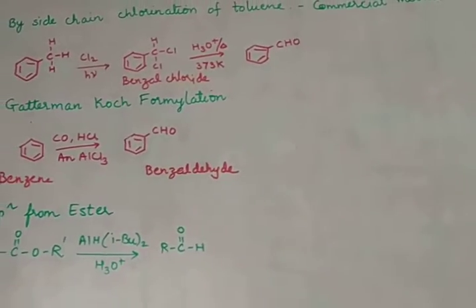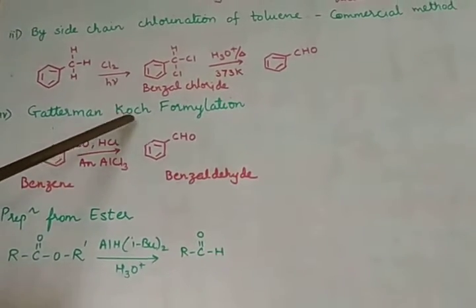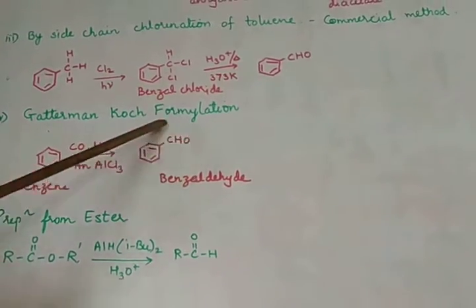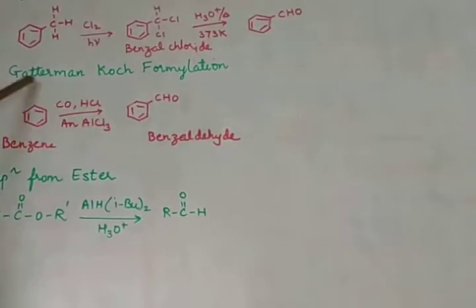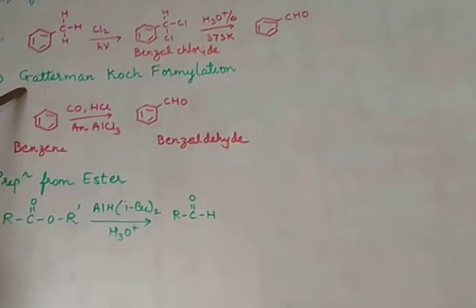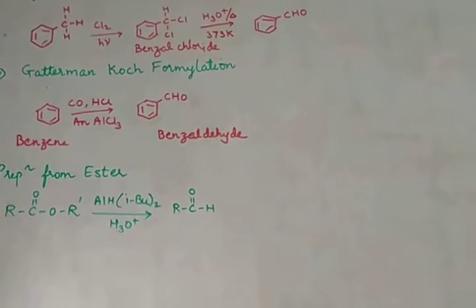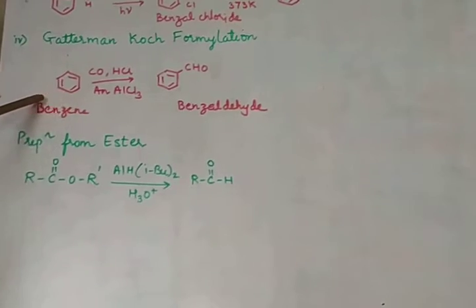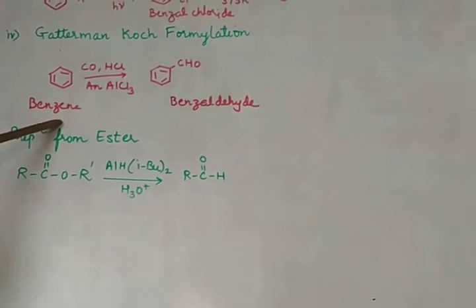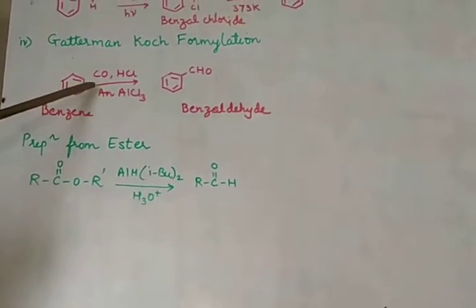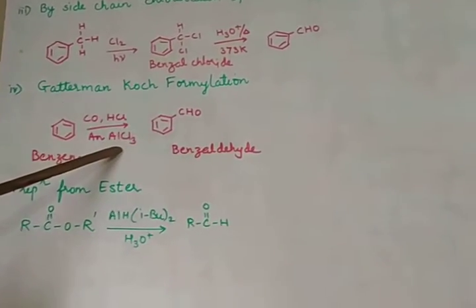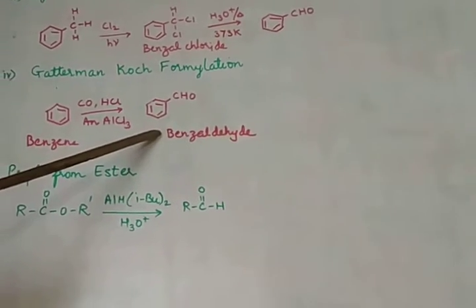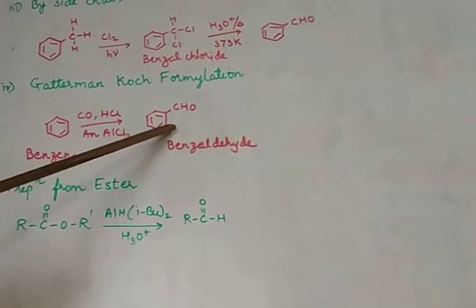The last reaction for preparation of aromatic aldehyde is the Gattermann-Koch formylation. A formyl group is the aldehyde group, and in this method we introduce the aldehyde group into the aromatic ring. Benzene is treated with carbon monoxide and HCl in presence of anhydrous AlCl3 to give benzaldehyde directly.